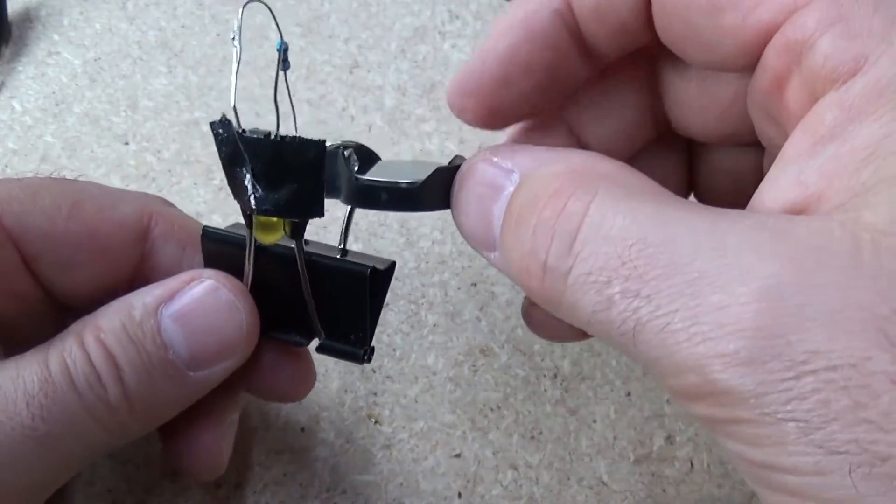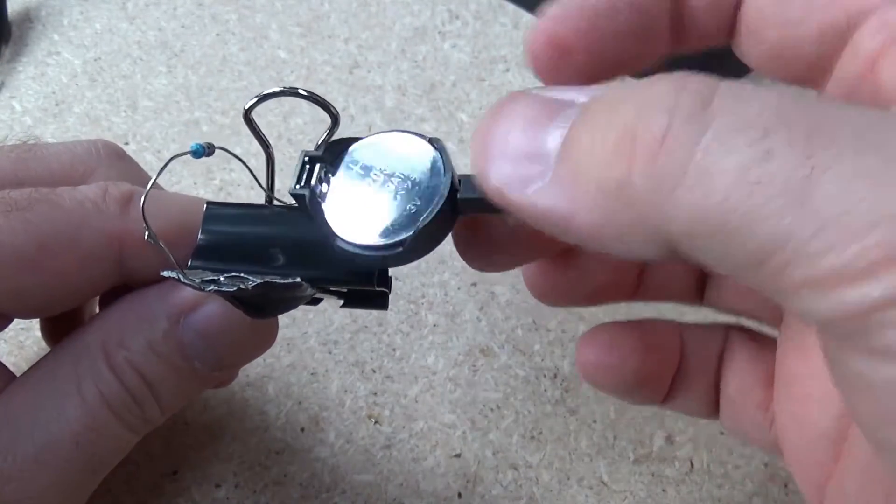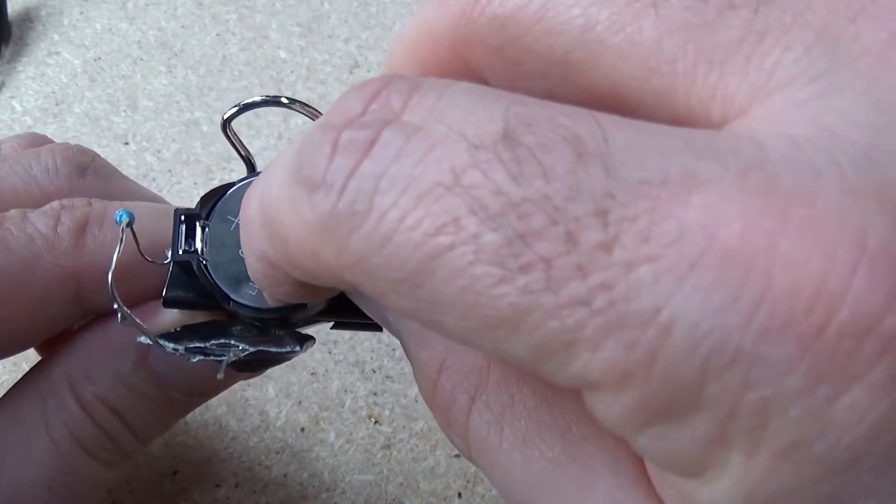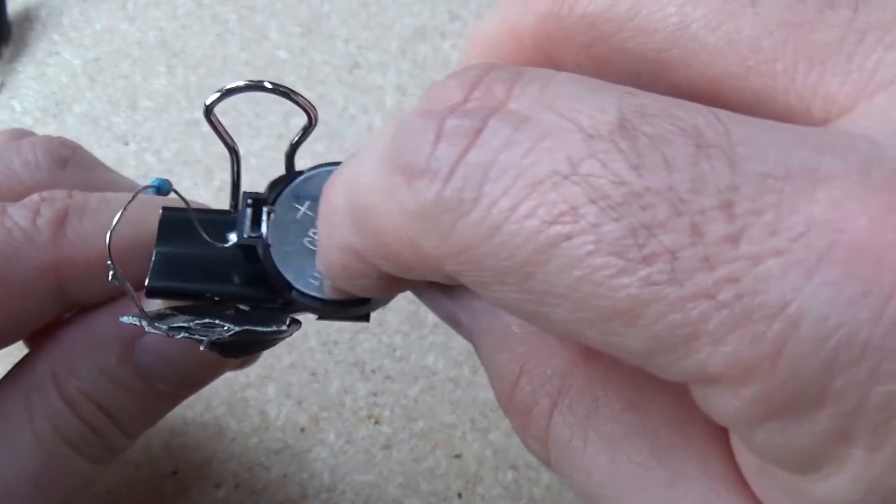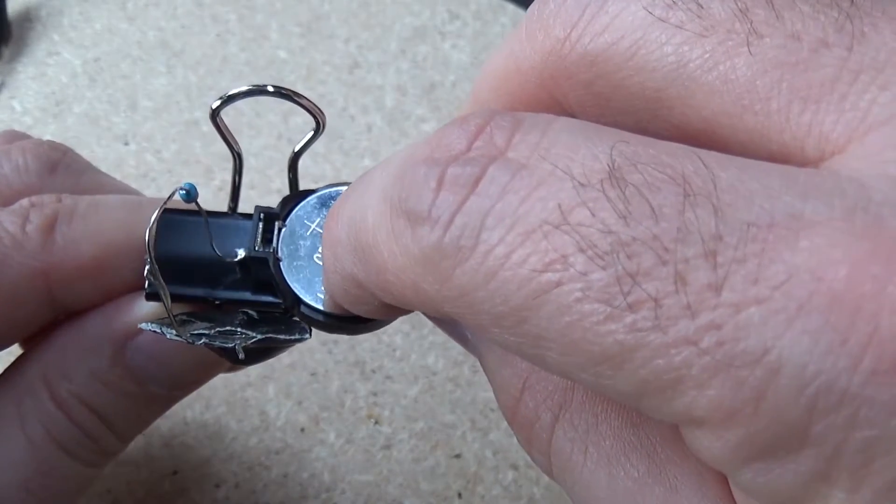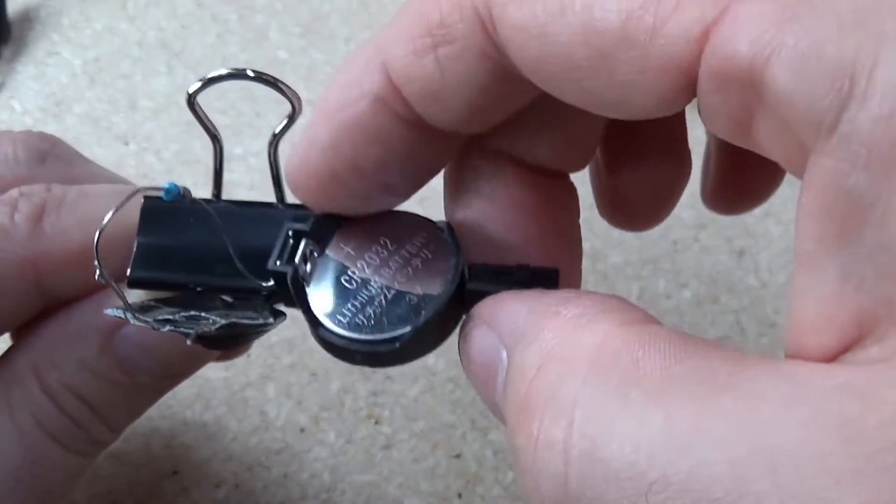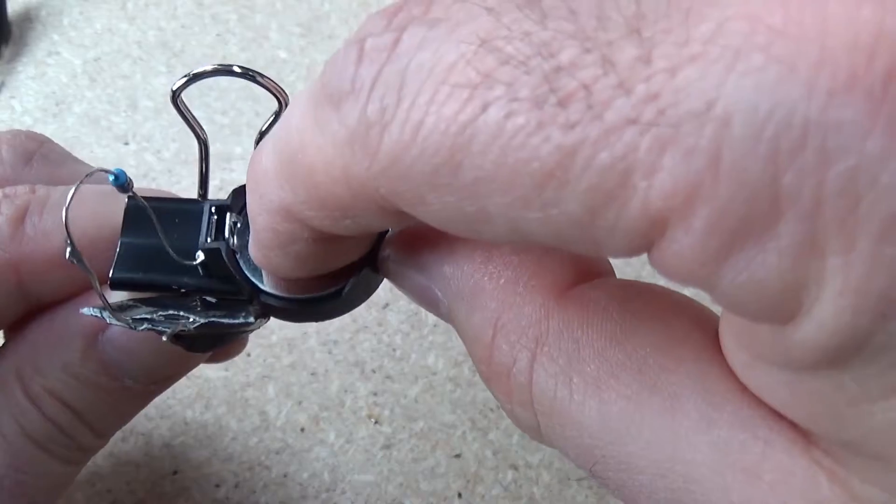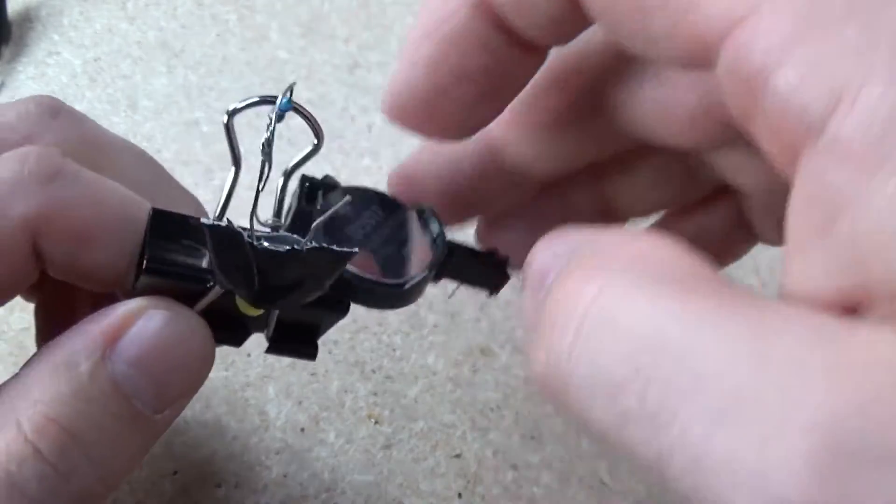And I'm going to place the battery holder and little switch just offset, not in the center of the clip, it will stop you from squeezing it. Just offset a little bit to the side there like that and I'm just going to put a bit of tape underneath the battery holder to make sure that there's no shorts.